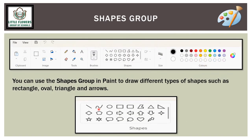You can use the shape group in Paint to draw different types of shapes, like a rectangle, circle, triangle, oval, or a line. Go to the Home tab, find the shape group, and select any shape, then drag on your work area to draw it.